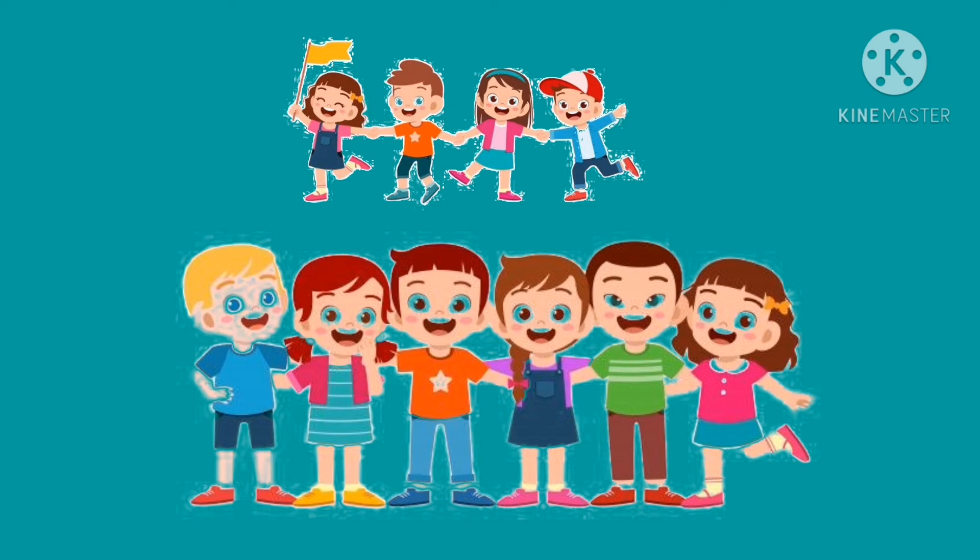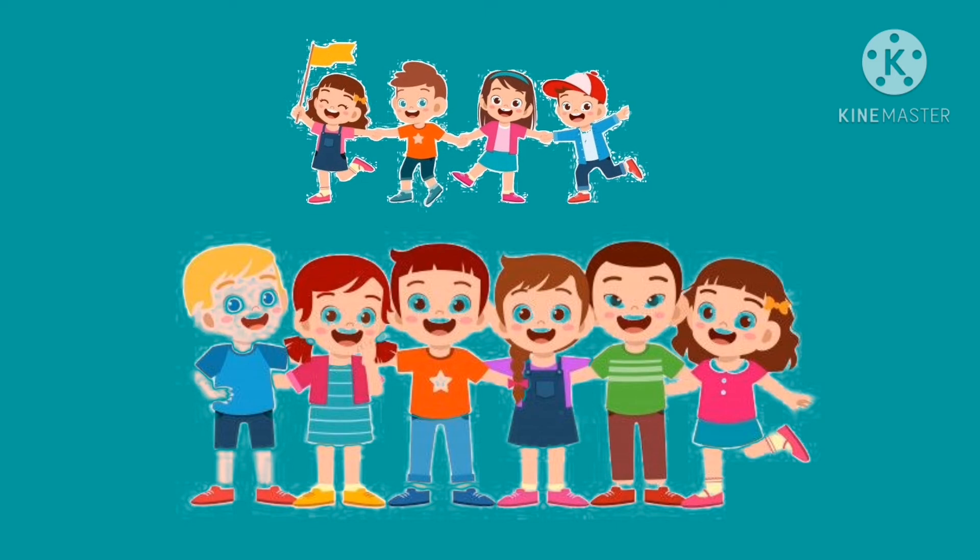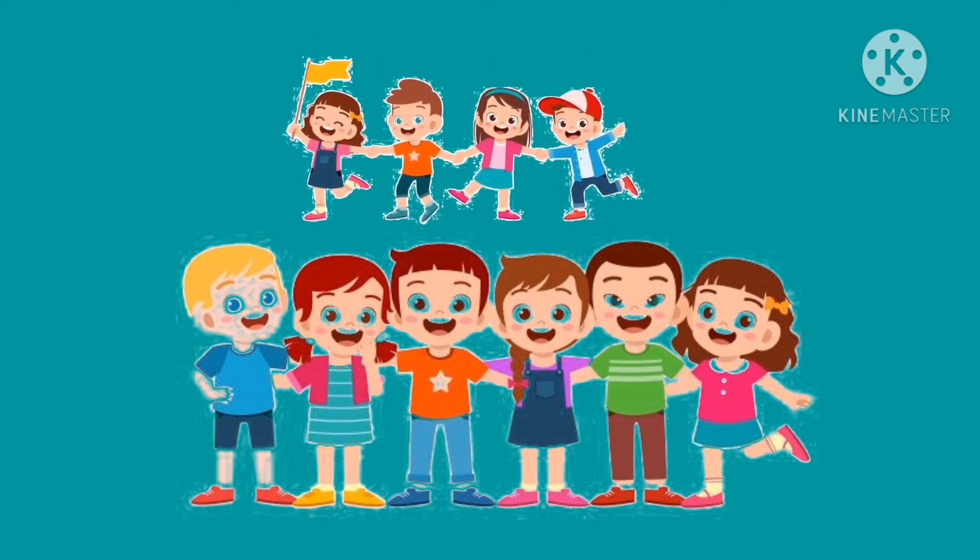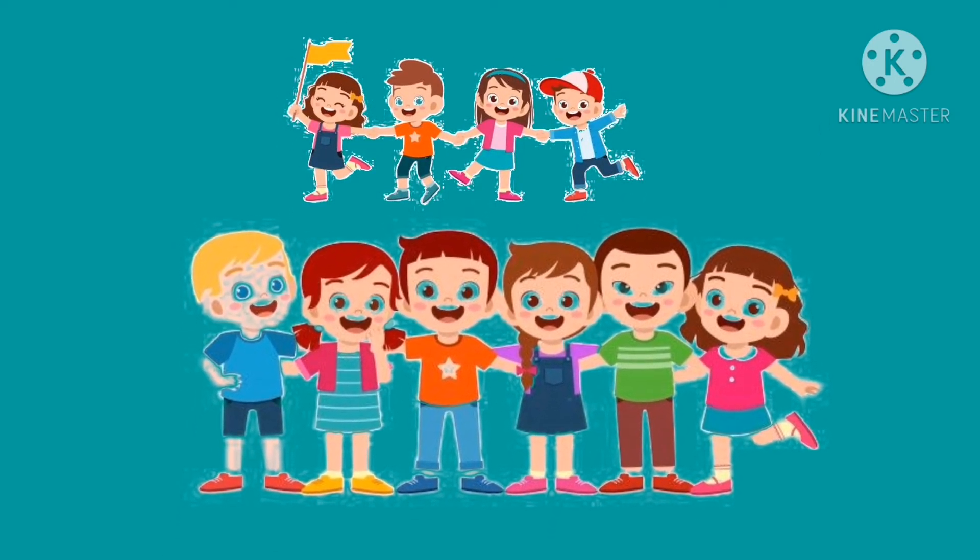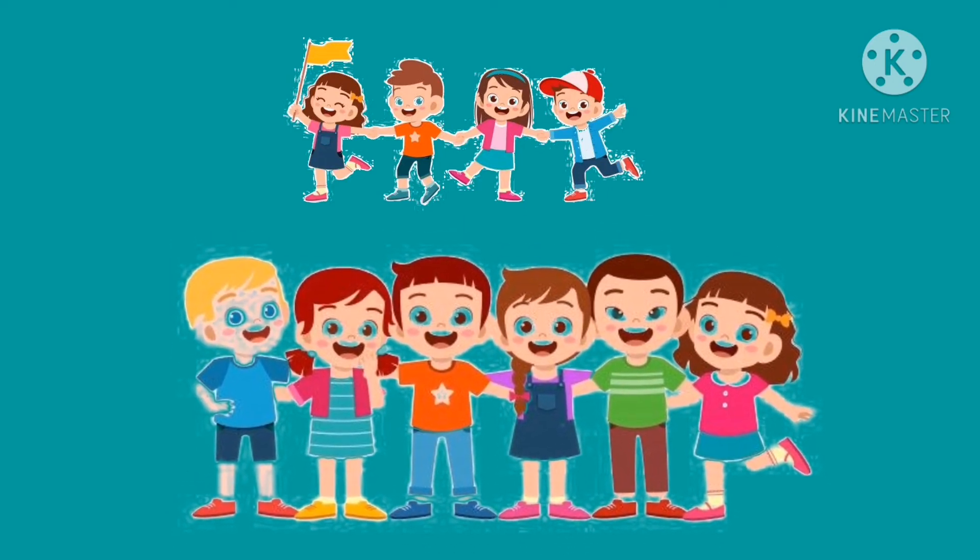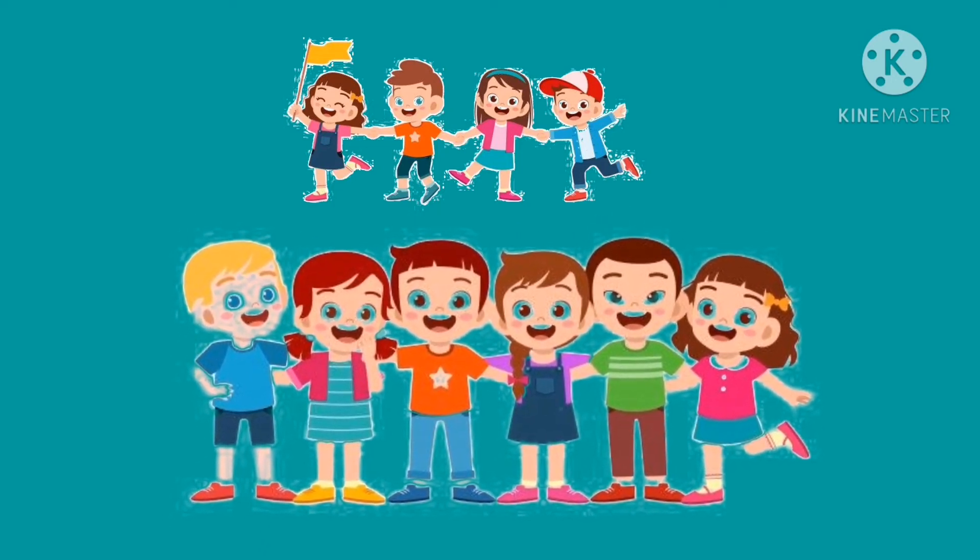Look, here we have two lines of kids. And, can you please tell me which line is long and which line is short? Yes. This is short. Only four kids. That is short. And, the line that has six kids is the long line. Which is the long line? Yeah, this is the long line. Very good.